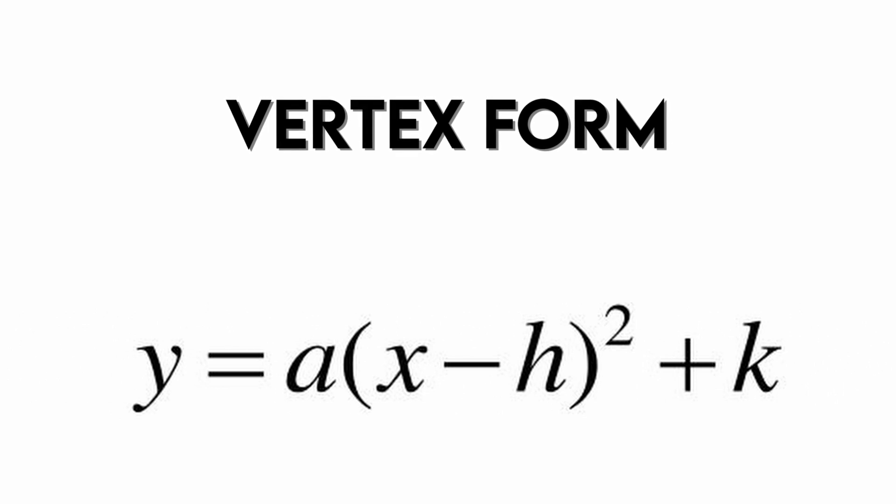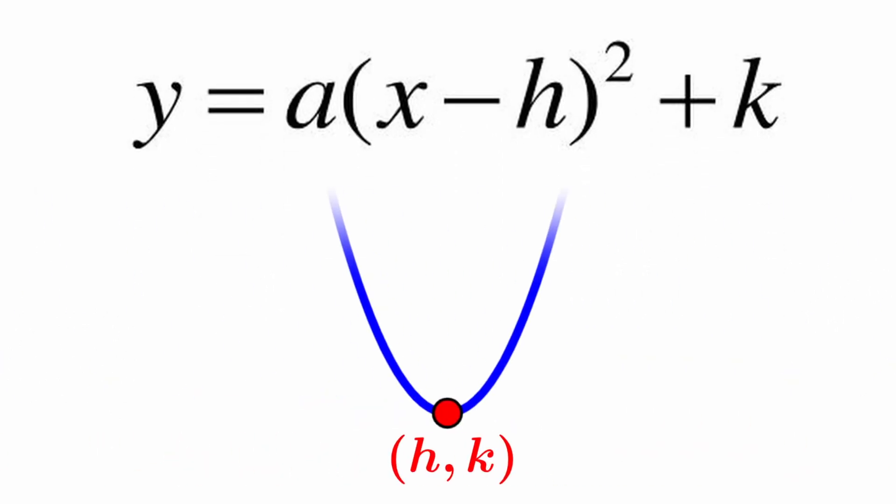The vertex form. When an equation is in this form, the coordinates of the vertex would be hk. Yeah, that's literally it. Quite a long formula, but the concept is quite simple.